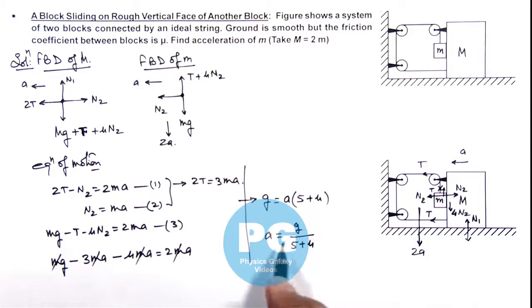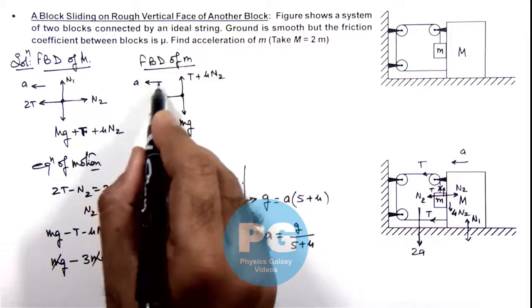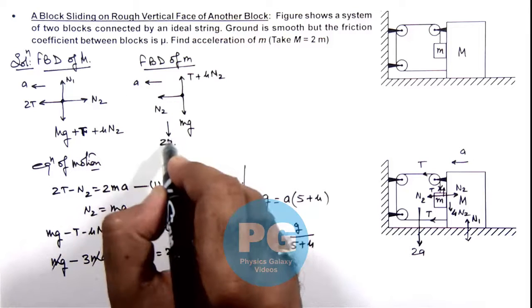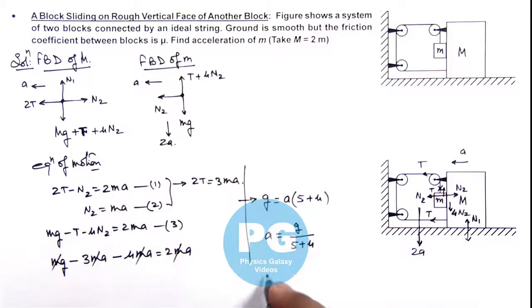Which is the acceleration of bigger block. For the block of mass m, you can see it is going toward left with ay, going down with acceleration 2ay. So acceleration of small m can be written as root of ay square plus 2ay whole square which is root 5 ay. This is the resulting acceleration of small block. So this is given as root 5 g by 5 plus mu, that is the final result of the problem.